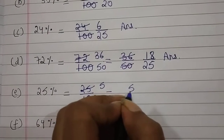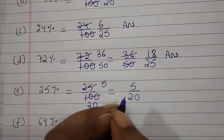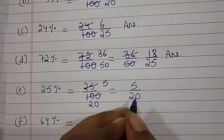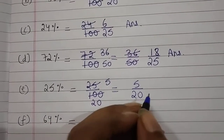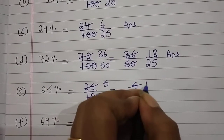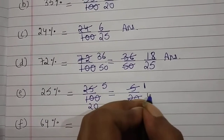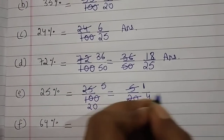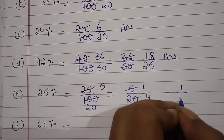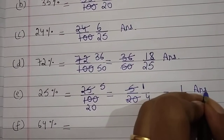Now students, 5 upon 20. Again हम लोग 5 and 20 को divide करेंगे 5 से. तो 5 बंटे 5 = 1, 5 बंटे 20 = 4. Now students, 1 upon 4 — this is your answer.